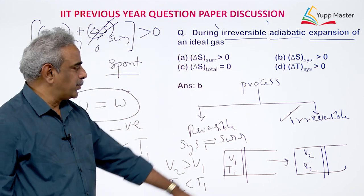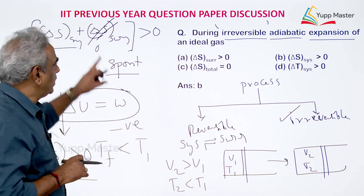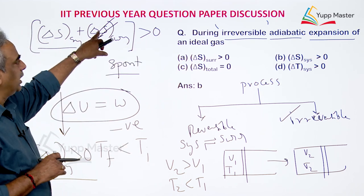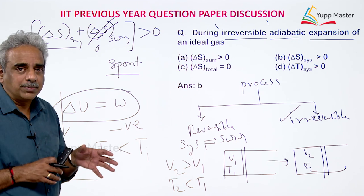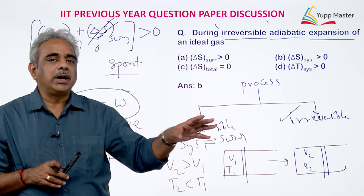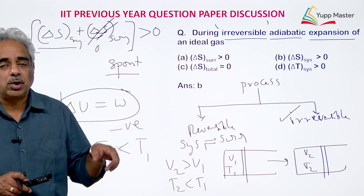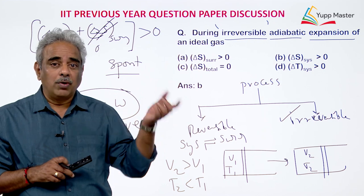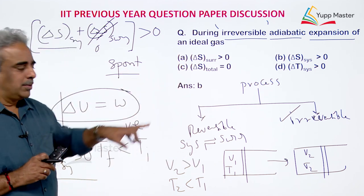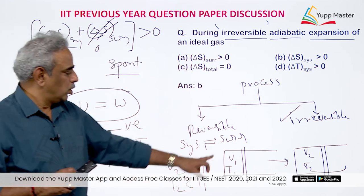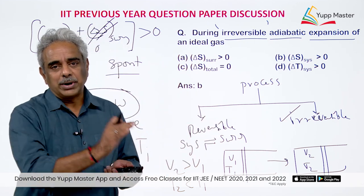The process is spontaneous because it is irreversible. Since it is spontaneous, the condition ΔS_total > 0 must be satisfied. Because ΔS_surrounding = 0 (no heat exchange), the system entropy must increase. During adiabatic expansion, volume increases (gaining entropy) and temperature decreases (losing entropy). The volume term dominates the temperature term because the process is happening and ΔS_system must be greater than zero. The increment in volume increases entropy to a greater extent than the cooling effect decreases it.